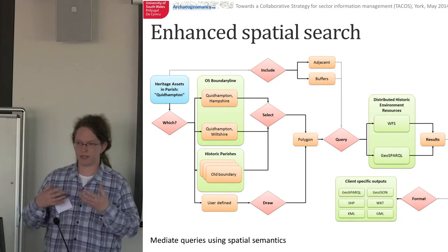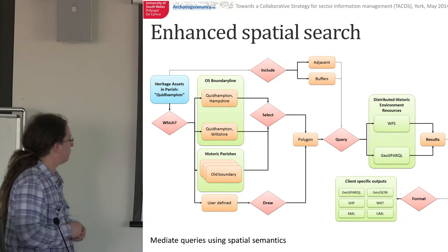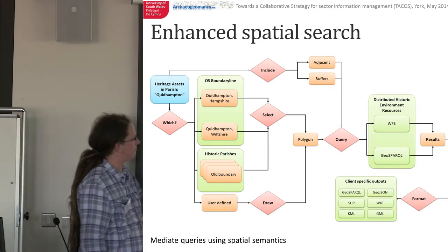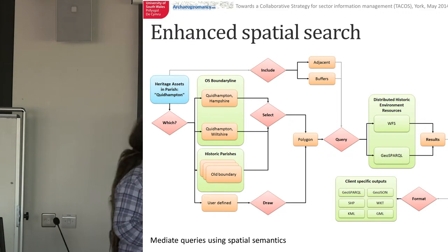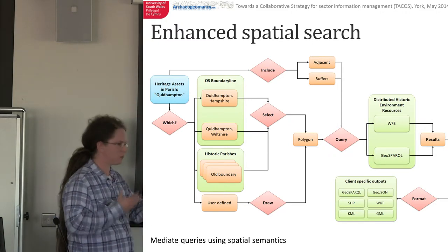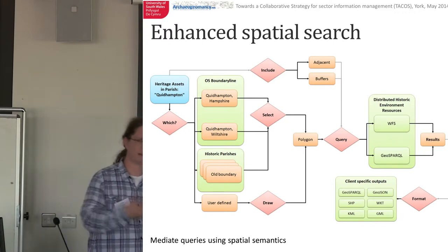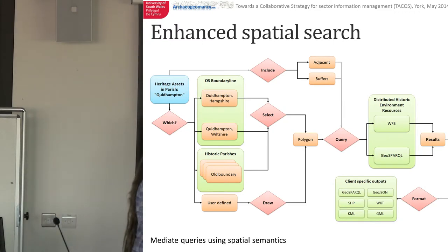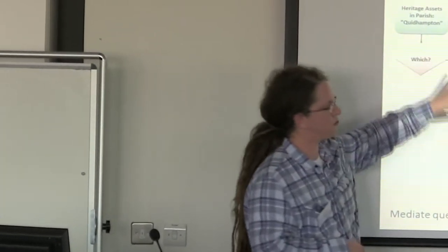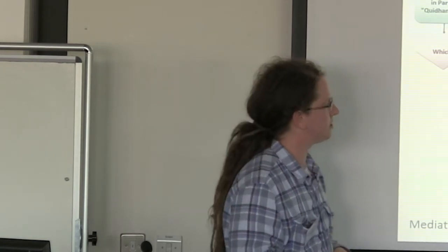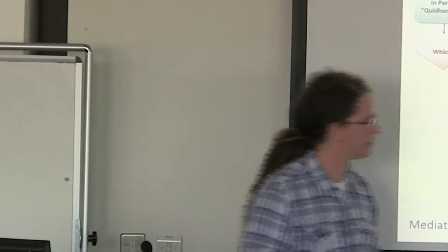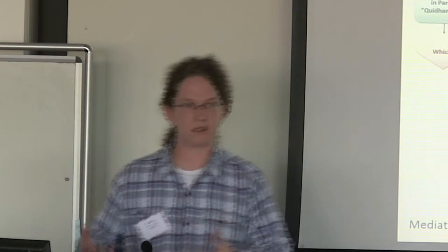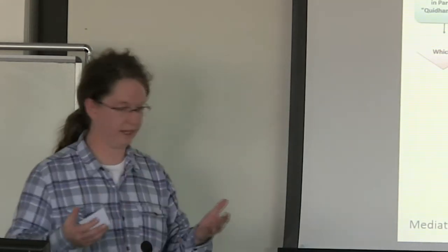We can use the spatial side of things to mediate our searches. If we're searching for heritage assets in a particular parish, our information system can present the different parishes and ask which one you want — there are datasets out there for referring to historic parishes too. Which geometry, which boundary do you mean when you talk about this particular parish? Or you can have a user-defined one. In other words, we can feed the geometries drawn out of this information system to use as a basis for query, pass that off to our web services, and request data back in a format that suits the need of our client application.